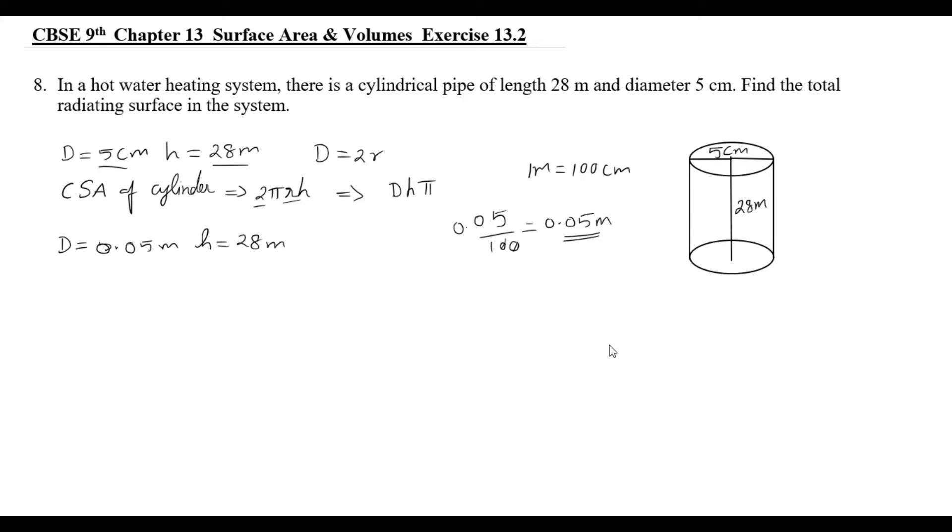So, we can use the diameter, height, pi. Pi is equal to 22 by 7. D into h into pi. D is equal to 0.05 into h is equal to 28. That means meter. Meters are equal to meter. What we do is, pi is equal to 22 by 7. The meter is equal to 4.